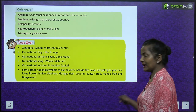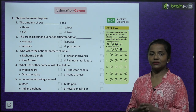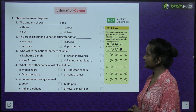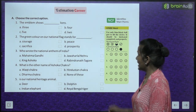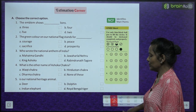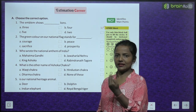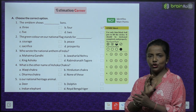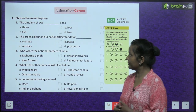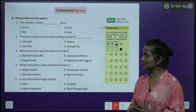I hope you have understood these national symbols well and why they are necessary and why we should respect them. Now the estimation corner: the national emblem shows four lions, but one is always not visible from the front — three are seen and one is on the back side. The green colour on our national flag stands for prosperity.